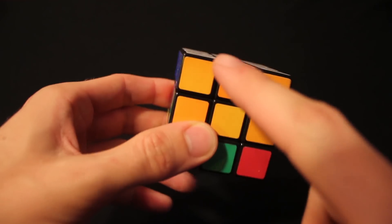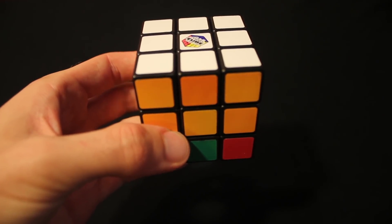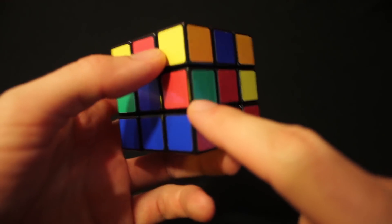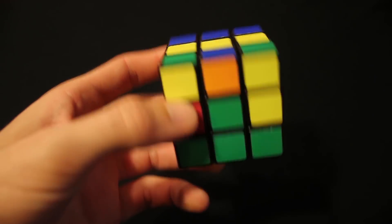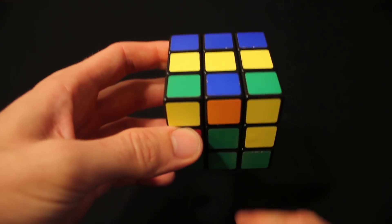If you followed along with my last tutorial for the first layer, you should be here. So this is where we want to go. We're going to solve the second layer. There's only four pieces to solve: one, two, three, four. So what you're going to want to do is put the white side on the bottom.